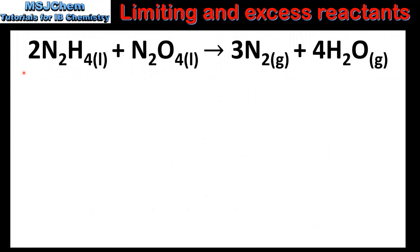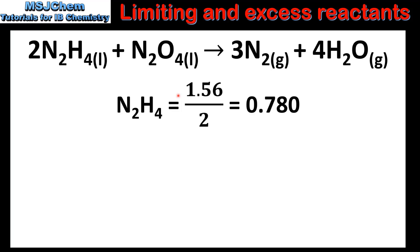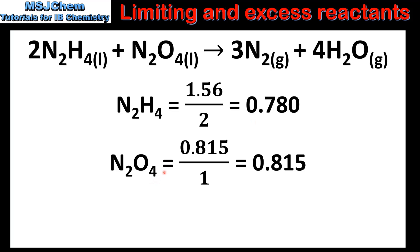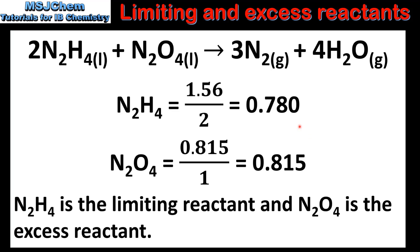Once we've determined the amount in moles of each reactant, we now need to divide by the coefficient. For N2H4 it's 1.56 divided by 2 — the coefficient of N2H4 in the balanced equation is 2 — which gives us 0.780. For N2O4 it's 0.815 divided by 1, because the coefficient of N2O4 is 1, which gives us 0.815. Comparing these two values, the value for N2H4 is the lowest, therefore it is the limiting reactant, and N2O4 is the excess reactant.